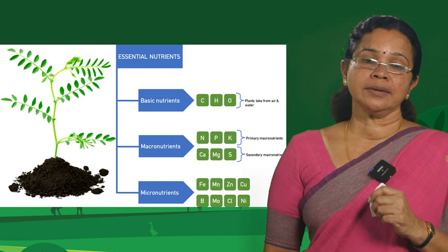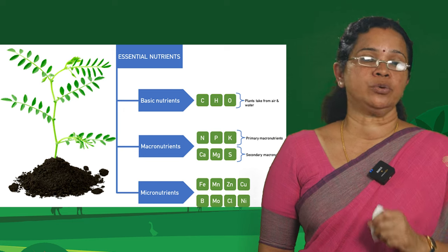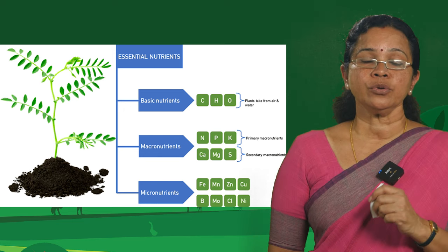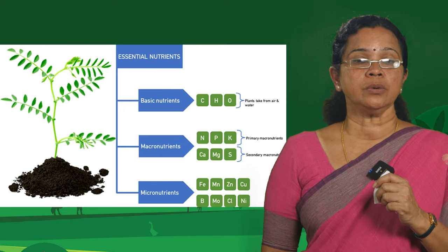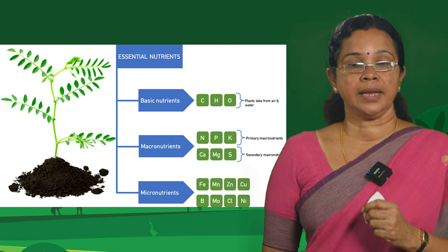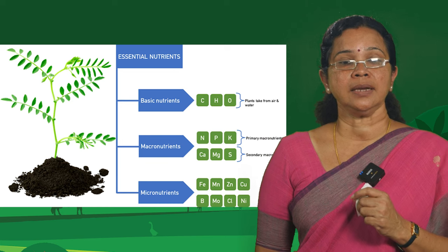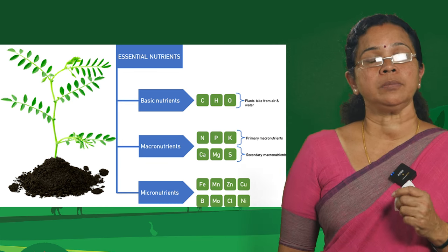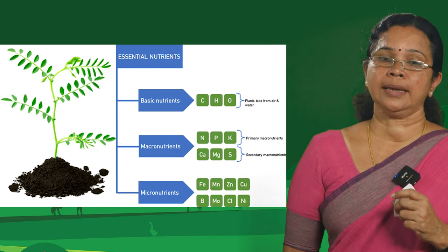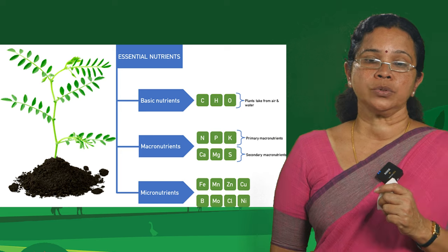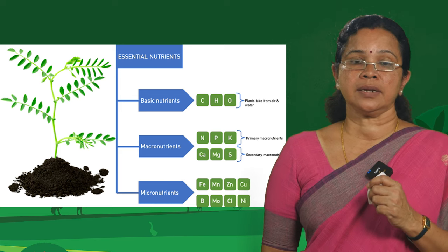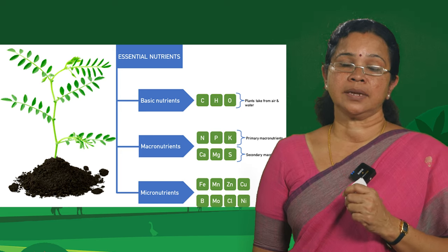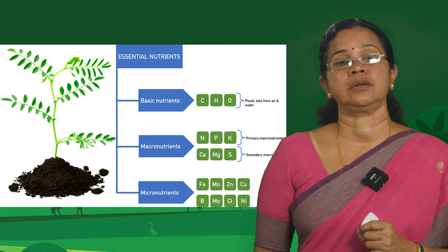The third category is the micronutrients. These include iron, manganese, zinc, copper, boron, molybdenum, chlorine and nickel. There are eight micronutrients that have been designated. When you talk about micronutrients, it is something like adding salt while cooking — without salt the food will not be delicious. Salt is essential, but if you add too large a quantity by mistake, you will not be able to have that food. In a similar manner, micronutrients are required but in small quantities, and they are essential.